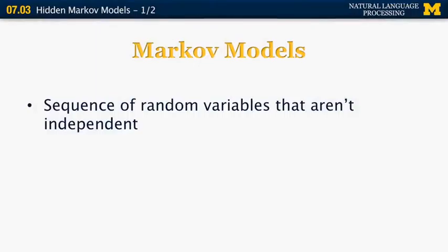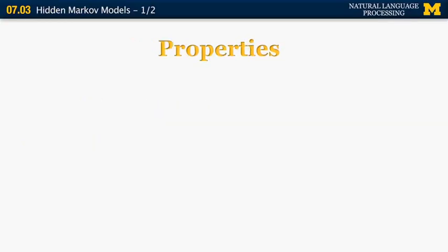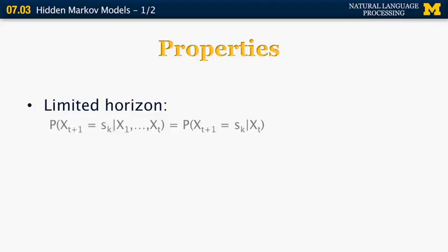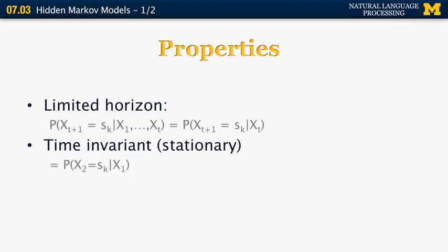A Markov model is a sequence of random variables that are not independent. For example, it could be weather reports — the temperature on a given day depends somewhat on the temperature on the previous day. It can also be text, so the probability of the next word or letter depends on the previous word or letter. Properties of Markov models include a limited horizon, meaning the probability at time t+1 depends only on the most recent history. They are also time invariant, so the probability of a variable at a given time does not depend on the time itself.